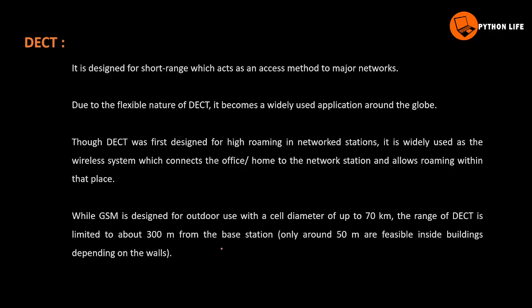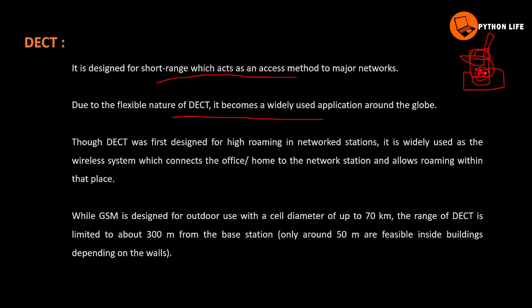DECT is mainly designed for short-range communication. Due to its flexible nature, DECT has become a widely used application around the globe. DECT is cordless communication - meaning if you have the base station, you can use the signal and monitor everything wirelessly. This is like a cordless telephone.